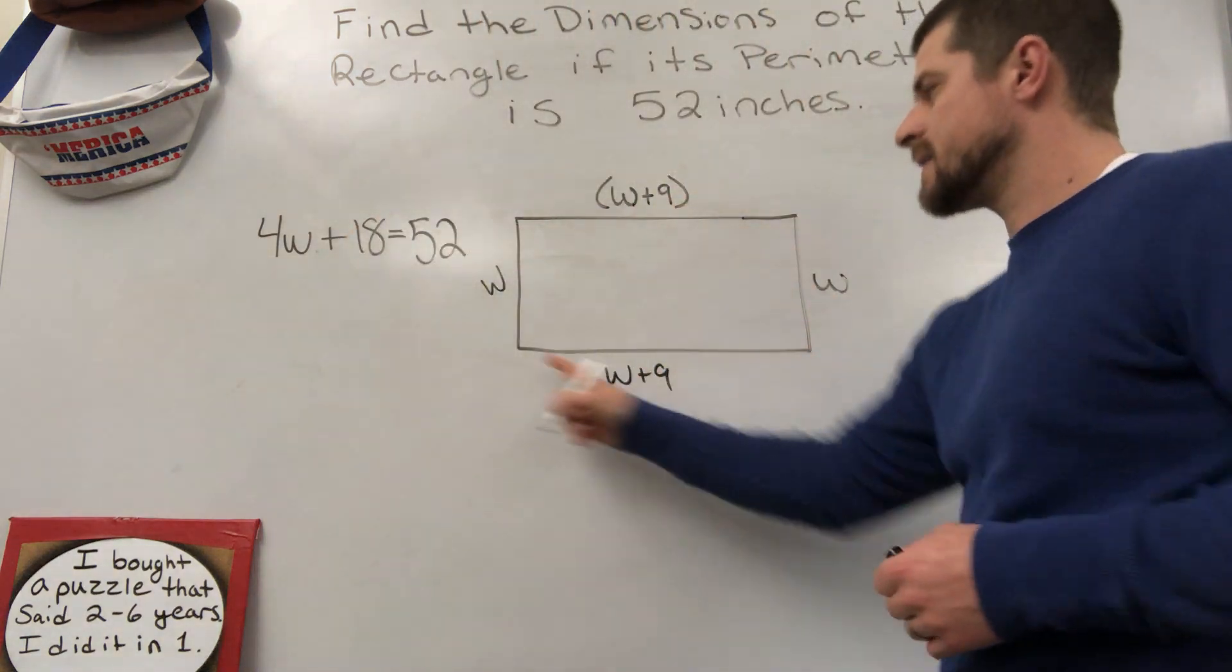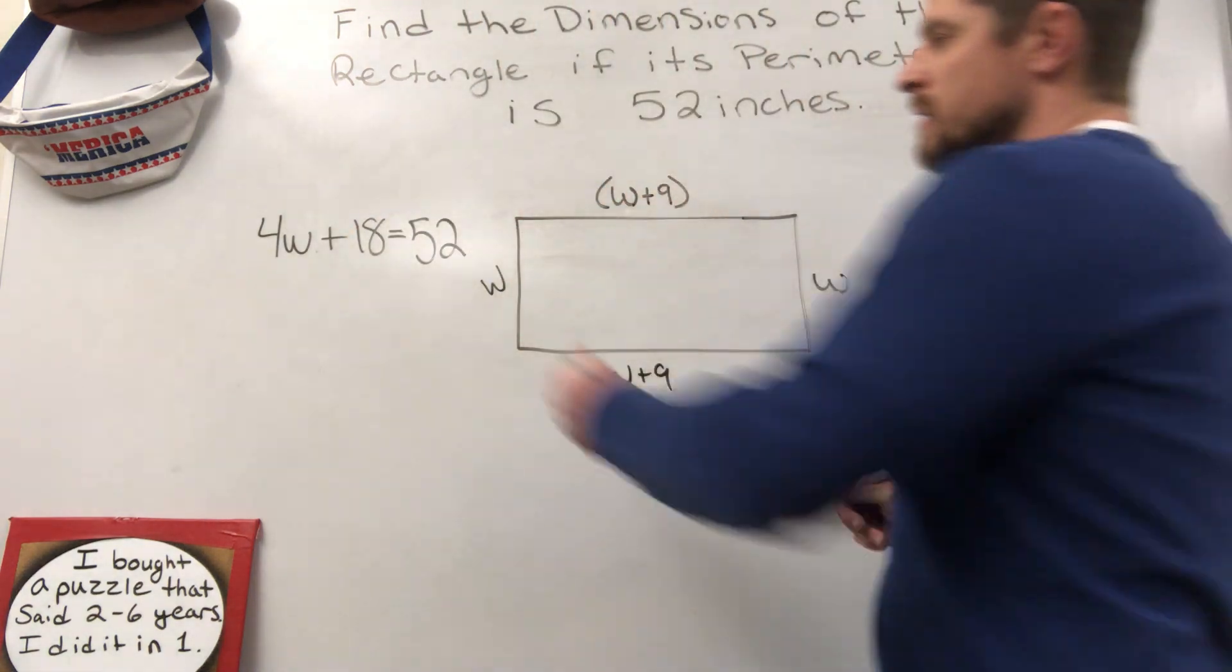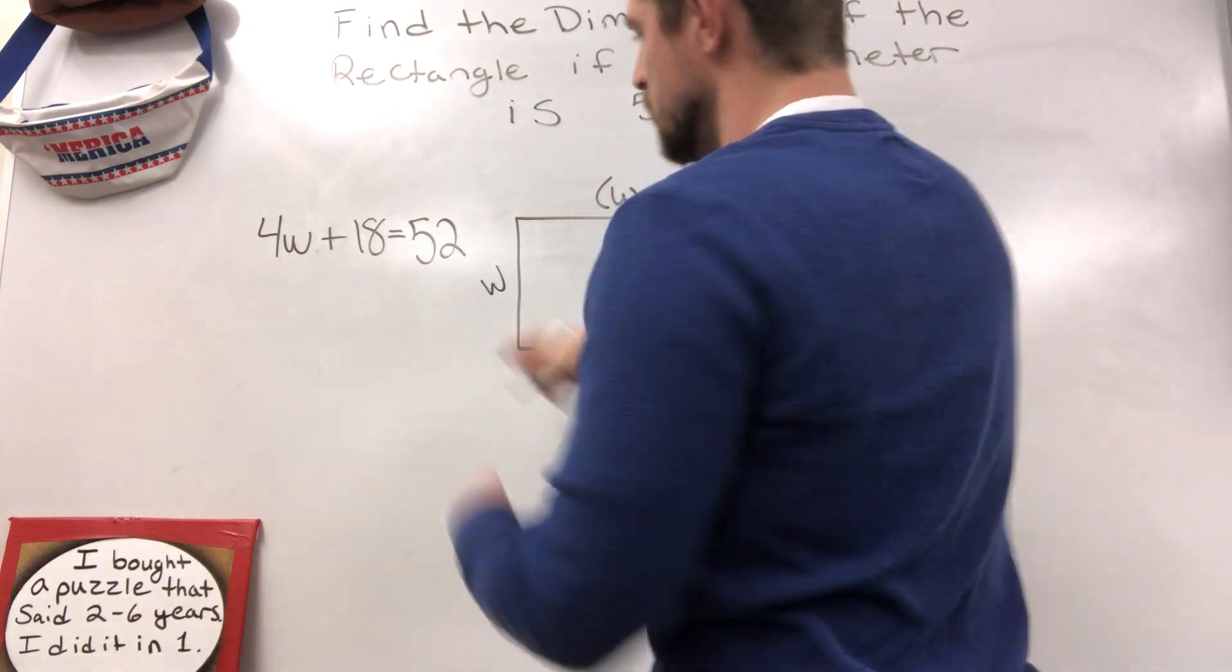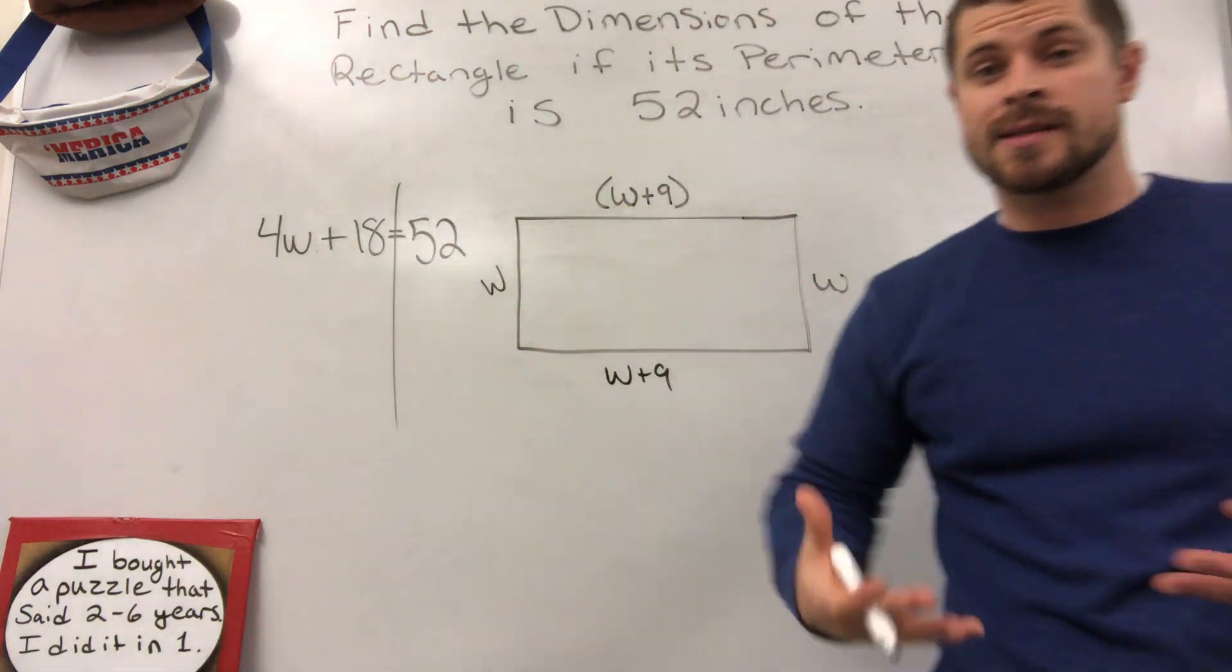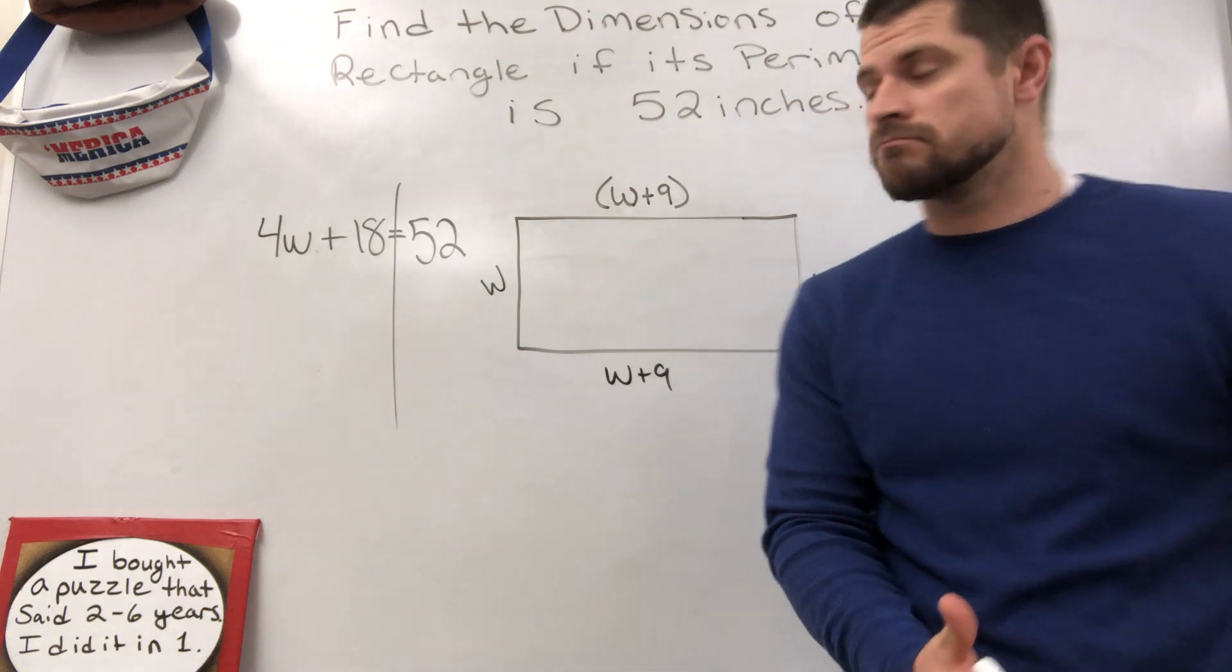Remember, everything added together is my perimeter. So, this is a simple two-step equation now to solve that we've set up. And what it's going to do is it's going to give us our value for W. All right.